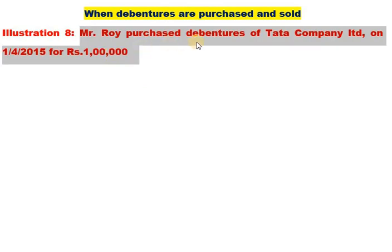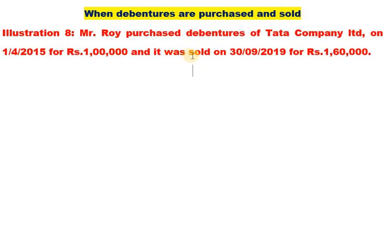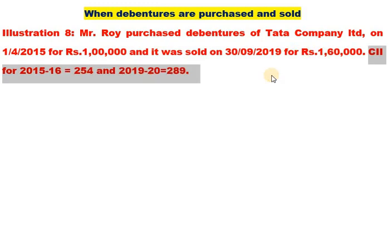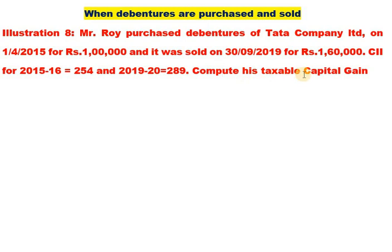Mr. Roy purchased debentures of Tata Company Limited on 1-4-2015 for 1 lakh, and they were sold on 30-9-2019 for 1 lakh 60 thousand. The Cost Inflation Index for 2015-16 is 254 and for 2019-20 is 289. Compute his taxable capital gain.